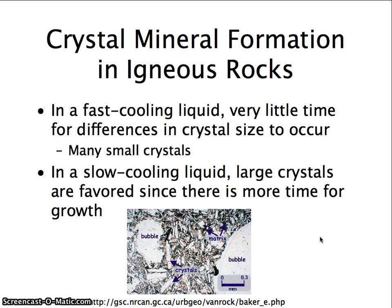In a fast cooling liquid, there is very little time for differences in crystal size to occur, so you end up with a lot of small crystals. In a slow cooling magma or liquid, large crystals are favored since there is more time for growth and more time for the atoms within the molten liquid to organize themselves into a crystal structure.